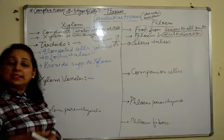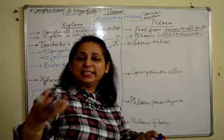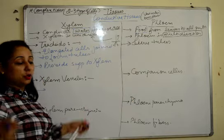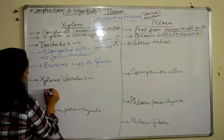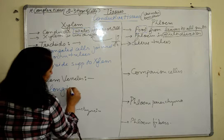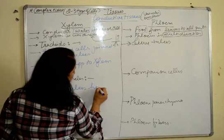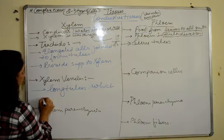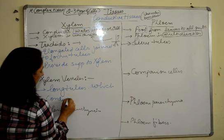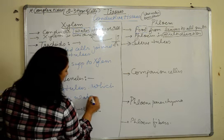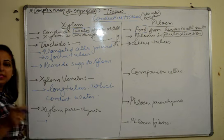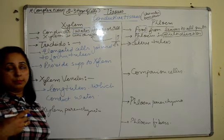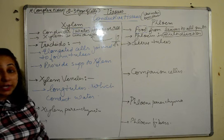Xylem vessels are long tubes whose main function is to conduct water. Xylem fibers basically give strength. Xylem parenchyma cells are living cells and they help in the storage of some food, as well as providing strength. This conduction requires energy — energy which comes from the food stored in it.